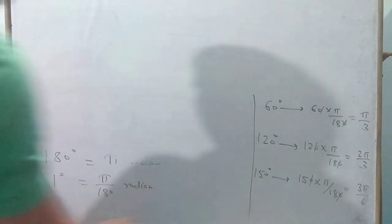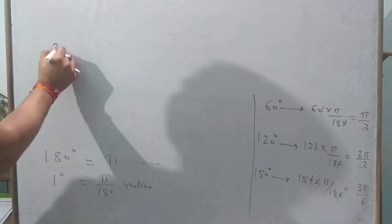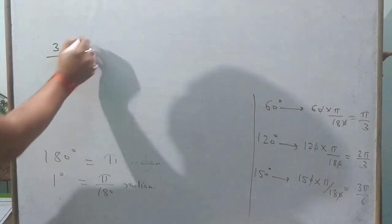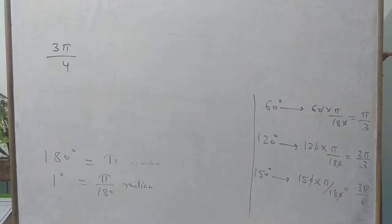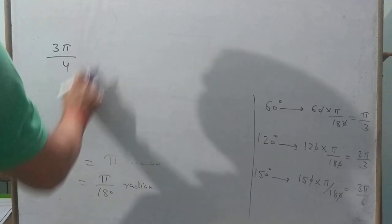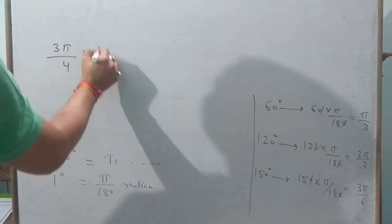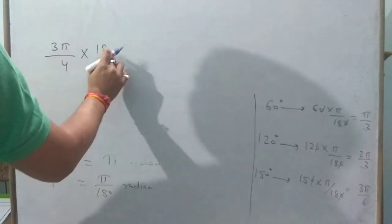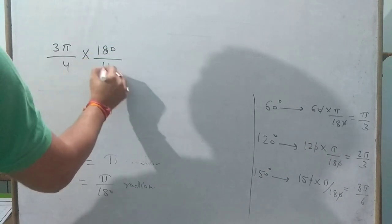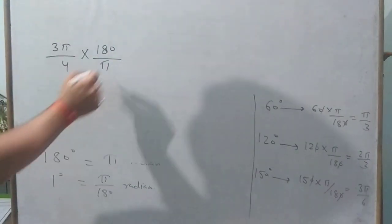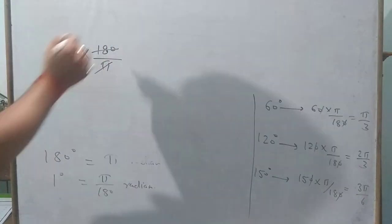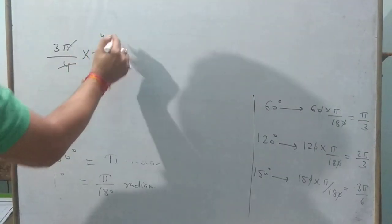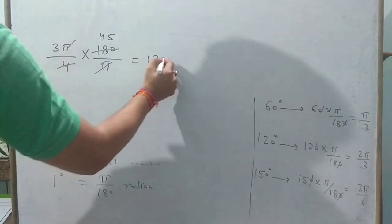If an angle is given in radians, for example 3 pi by 4, since it contains pi it is in radians. To convert to degrees, multiply by 180 upon pi. Pi cancels, giving 3 times 180 divided by 4, which equals 135 degrees.